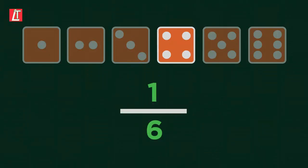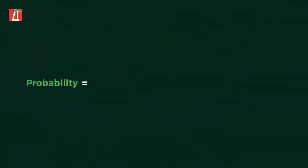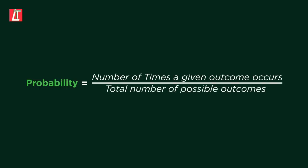Remember this formula to help you do the calculations. Probability equals the number of times a given outcome occurs over the total number of possible outcomes.